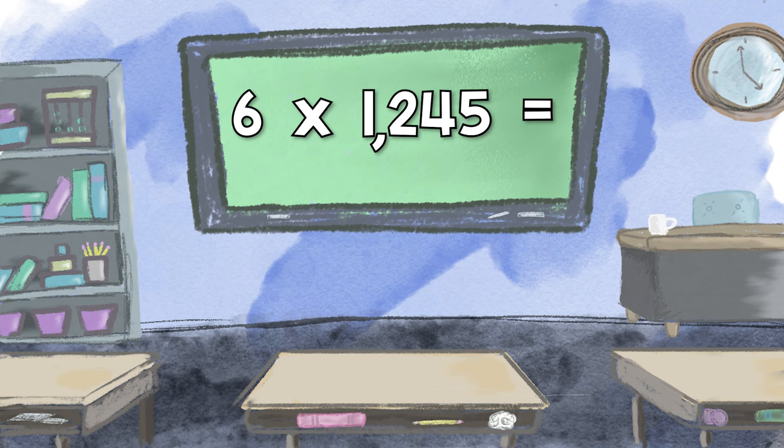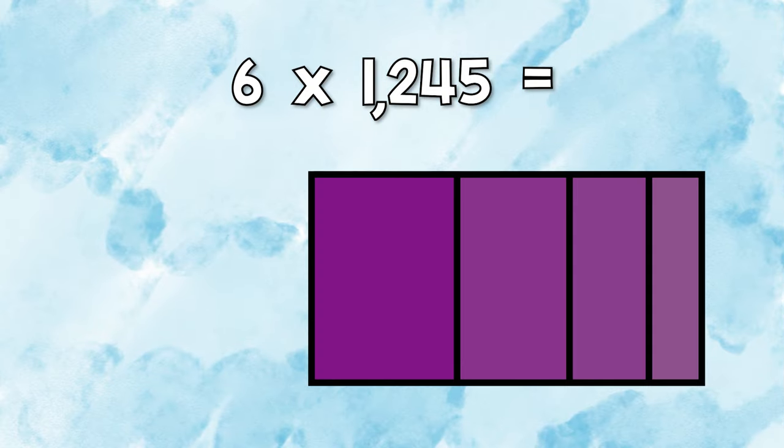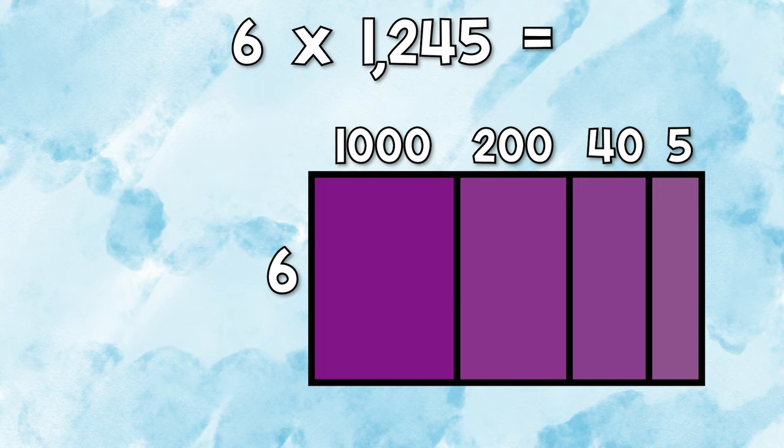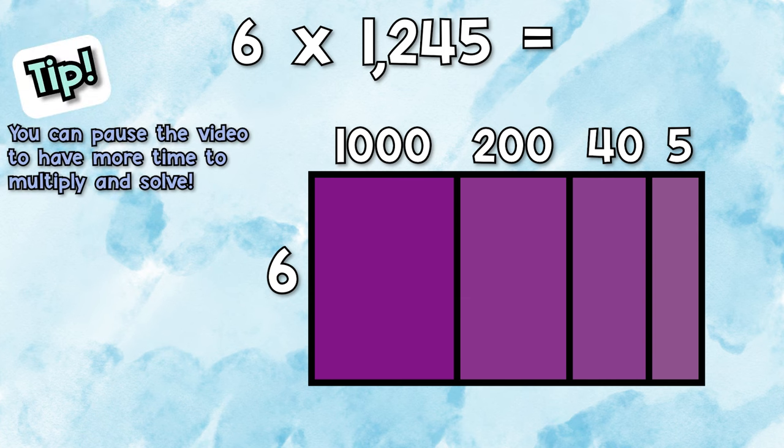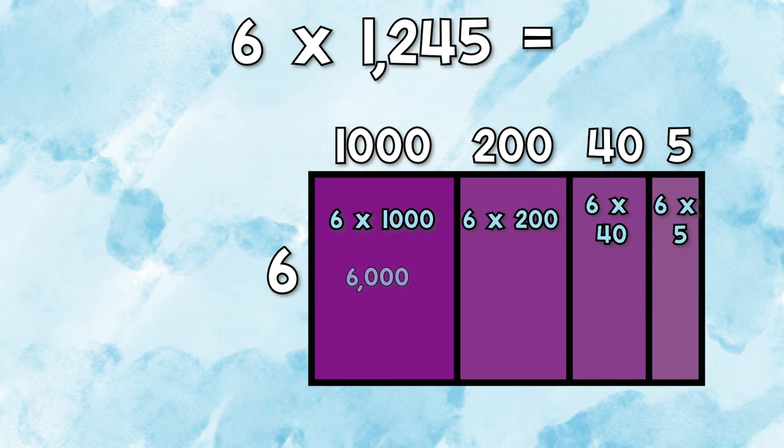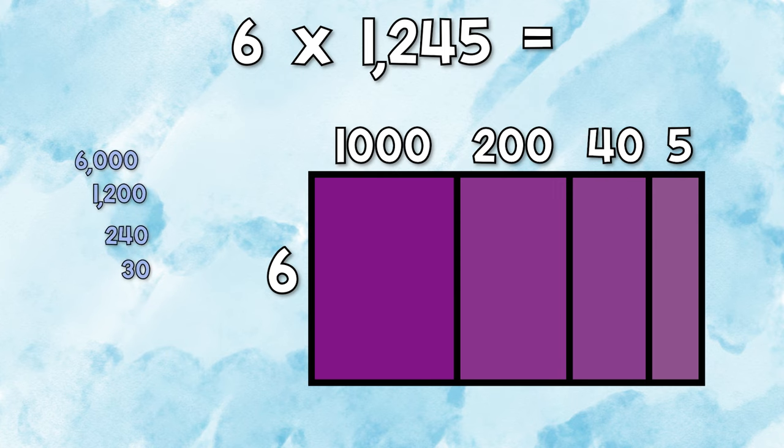6 times 1245. First, we're going to put 6 on one side, and then we're going to break up 1245 by place value. So that'll be 1, 2, 4, 5. Okay, let's multiply. Once you get these four products, you will then add them together to get your answer.